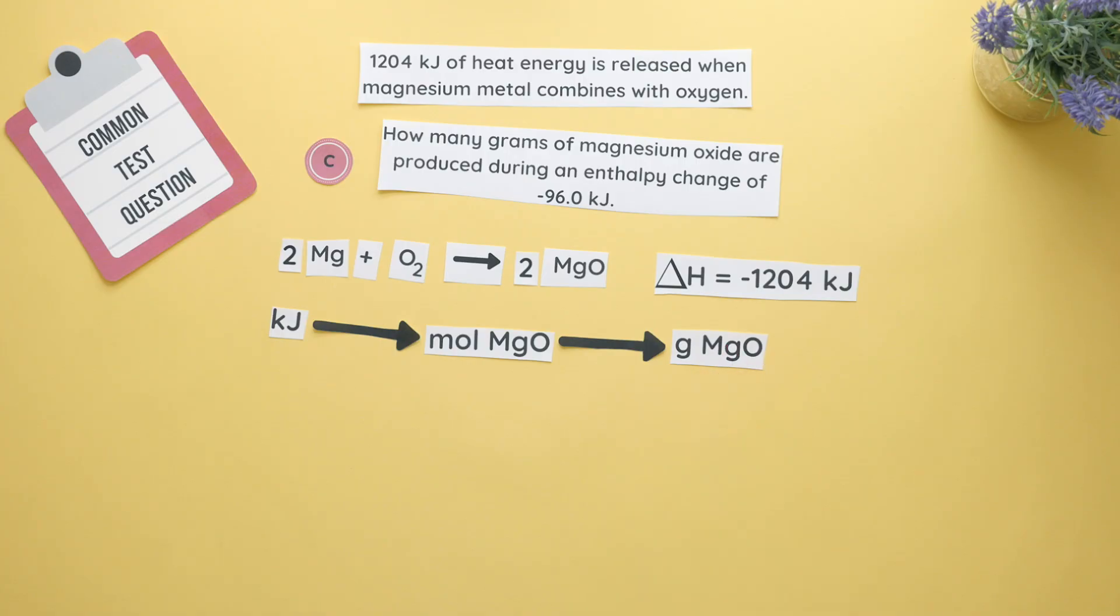Our setup will start with our given value of negative 96.0 kilojoules and we will use the enthalpy change as our conversion factor. This time it's flipped because we always align our units so they can cancel out. So kilojoules goes on the bottom and two moles of magnesium oxide goes on top. We found this from our balanced equation.